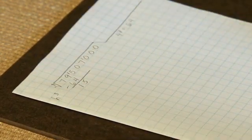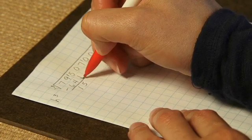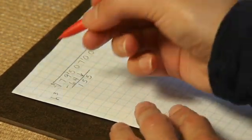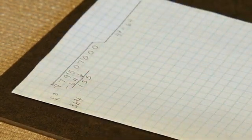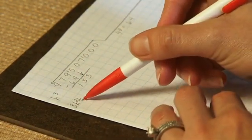We can bring down the next digit, which is five. And now we're going to build our next layer, which is going to be the hundred square, 10 high.